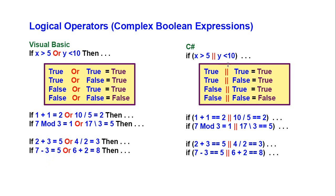In C#, it's the same thing except rather than the word OR, we use double pipes. The pipe character is shift-backslash, also referred to as the vertical bar — two of them, two pipes or two vertical bars. The expressions and truth tables are exactly the same: if either side is true, they evaluate to true.